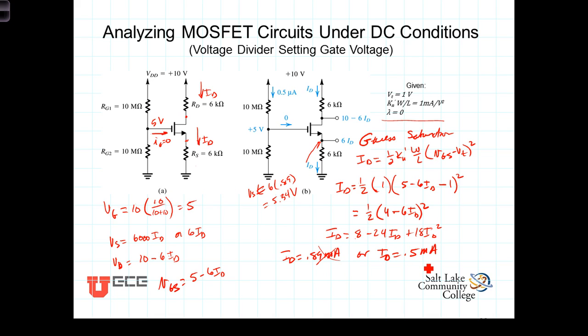We know then that I_D is equal to 0.5 milliamps. Now with I_D equaling 0.5 milliamps, then what is V_S? So at I_D equaling 0.5 milliamps, then V_S is going to equal 0.5 times 6 kilohms. V_S then would be 3 volts.